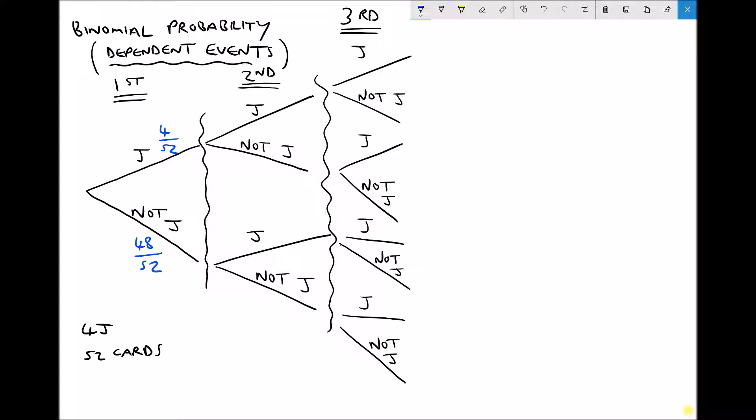Now if we were to replace that card back in the pack, then the probabilities for our second event would be exactly the same, but we're not going to replace that card. Now that we've removed that card, there can only be 51 left in the pack. So if we take that top line when we've removed that first card, it was a jack. That means there's only three jacks remaining in the pack and there's only 51 cards. So our probability of getting a second jack, assuming we've already drawn a jack, is 3 in 51.